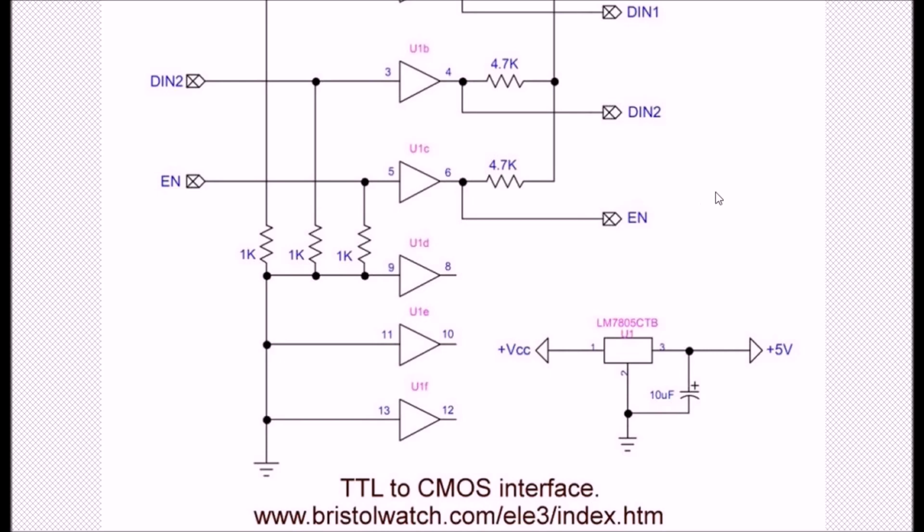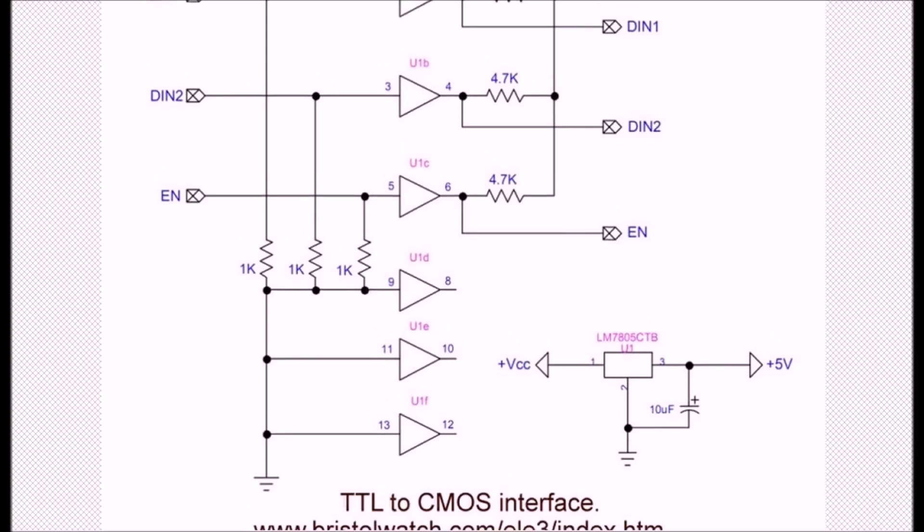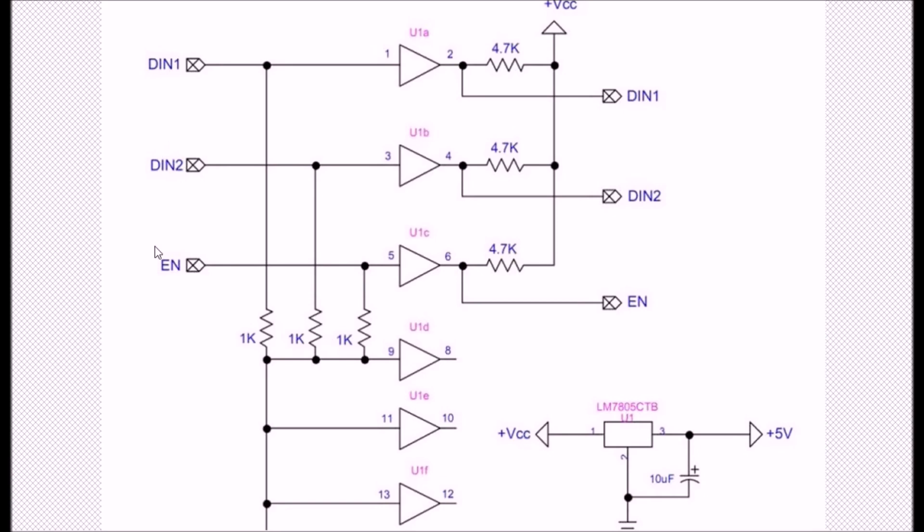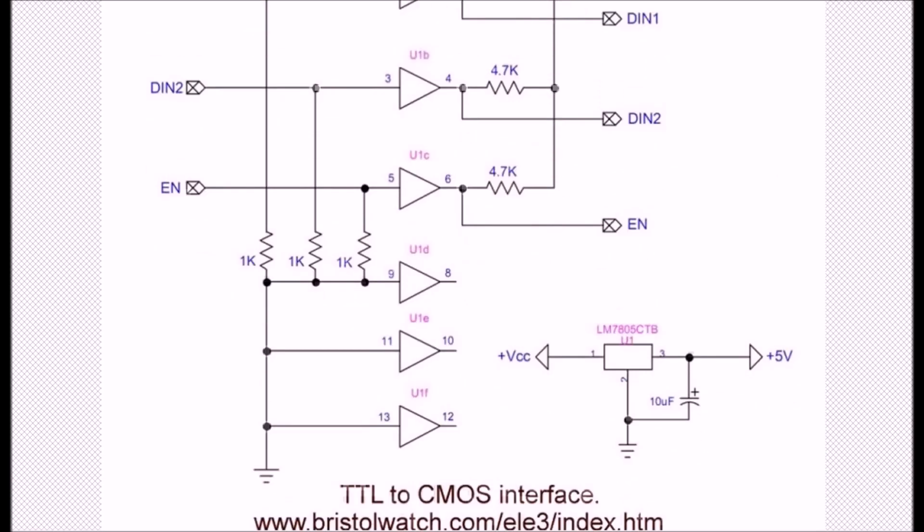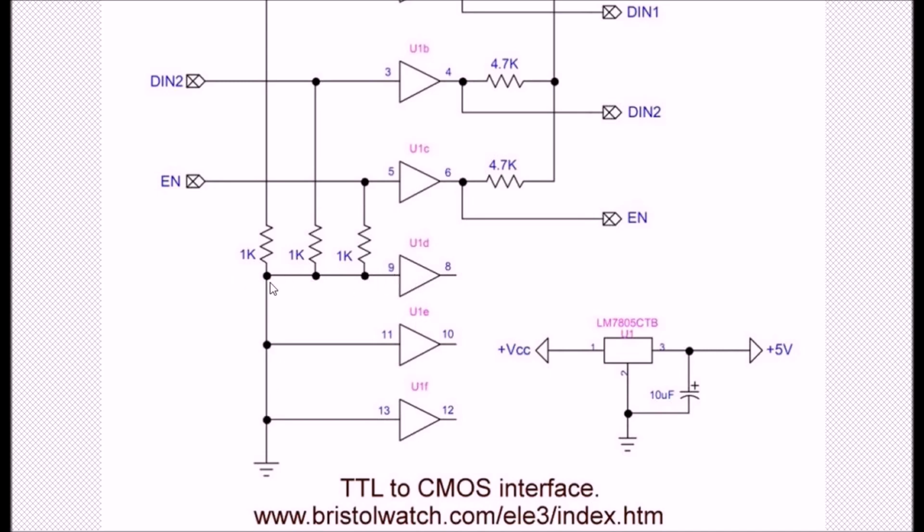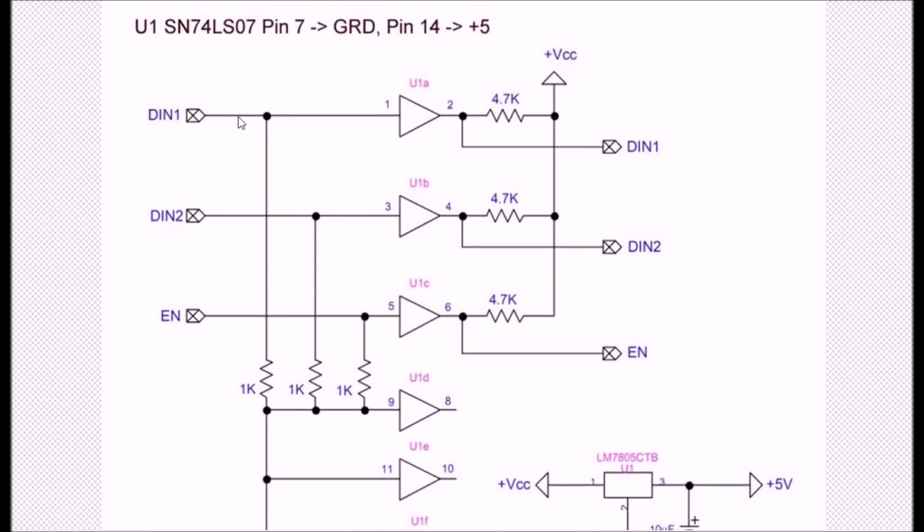We will see momentarily why this is important. Let's note a few things on TTL circuits such as this. On the inputs, particularly if there's nothing connected, you absolutely need pull-down resistors on the inputs of these little gates. I used a 1k, a 2.2k also works. Note I only use three of the six. The other three that I'm not using, you tie the unused inputs to ground.